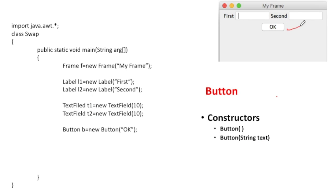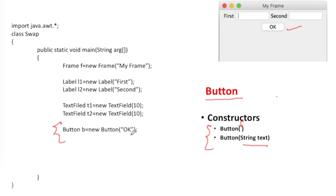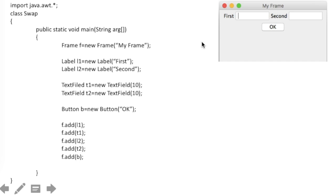Next I want a button. The Button class is available in the AWT package and has two constructors: a no-parameter constructor, and a second constructor that takes the label string you want on the button. Here I have created a Button b using new Button('OK'), giving it the label 'OK'. Now I have a frame, two labels, two text fields, and a button.